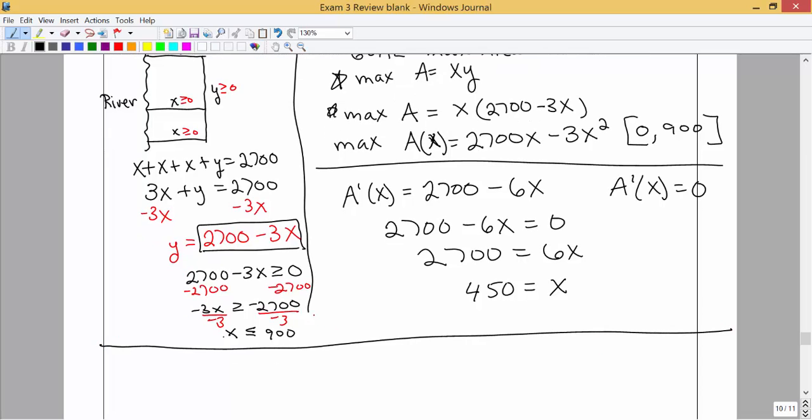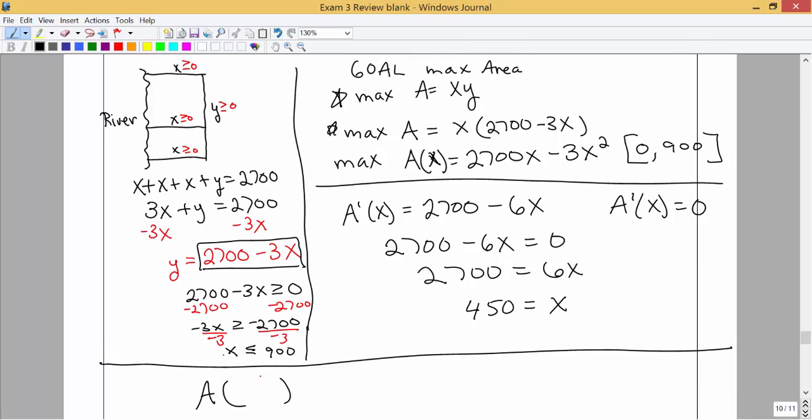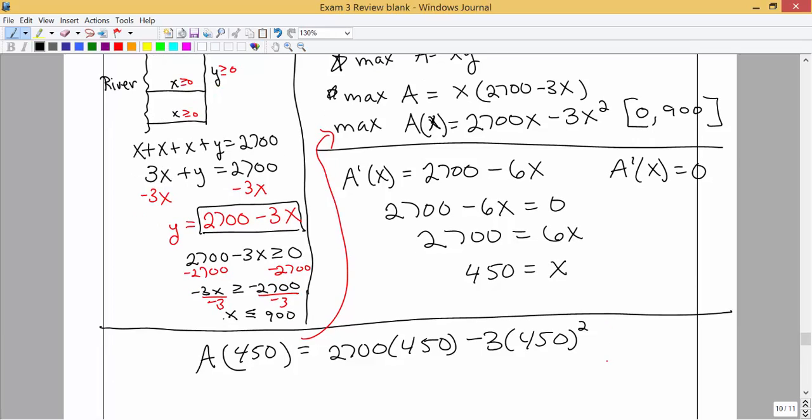Alright, remember we're trying to maximize that area, so we want to figure out what values we need to plug in. So we know we're going to plug in 450 into the original area function, and I'm going to plug it back into this form right here. So that would be 2700 times 450 minus 3 times 450 squared. Put that in your calculator exactly as you have it written there, and I get 607,500.